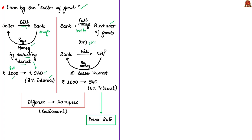Alternatively, the bank can convert these bills into money at a lesser discount rate from RBI. For example, at a 6% interest rate, the bank will receive ₹940 from RBI. So the profit for the bank is ₹20 — the difference between ₹960 and ₹940 — which is called the re-discount. This 6% rate is the bank rate, also known as the discount rate.